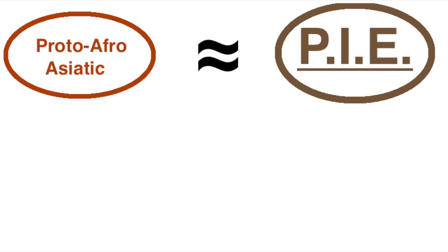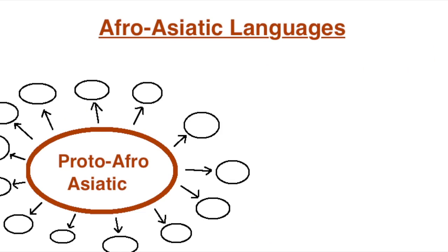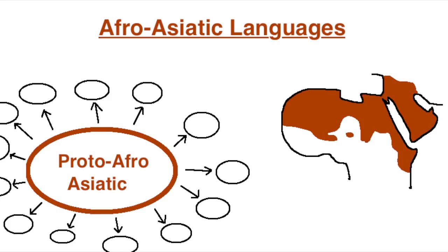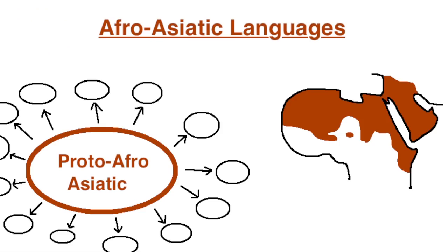Similar to Proto-Indo-European, we don't have any written records of it or anything, but rather it's the theoretical ancestor of the Afro-Asiatic languages, a group of similar languages spoken in a lot of northern Africa and the Middle East. We don't have any idea when it might have been spoken, or at least nothing more specific than before 7000 BC and after 16,000 BC, but since then it's diverged into a lot of different languages.